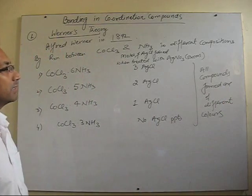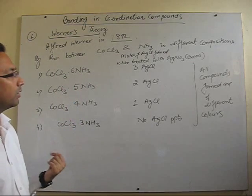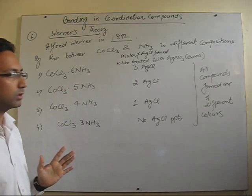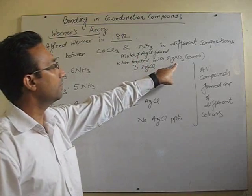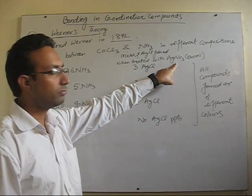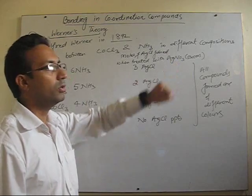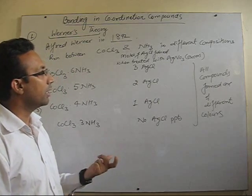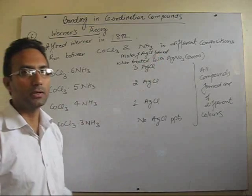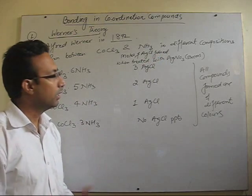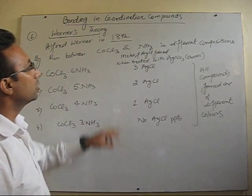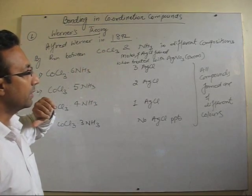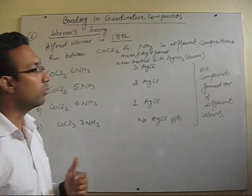Now how did he test these compounds? In order to elucidate their structure, he dissolved all these compounds in aqueous solution followed by a silver nitrate test. He wanted to know how many free chloride ions are present in the compound which can react with silver ions to form white precipitates of AgCl. He then quantitatively measured those precipitates and converted the amount into moles of AgCl.